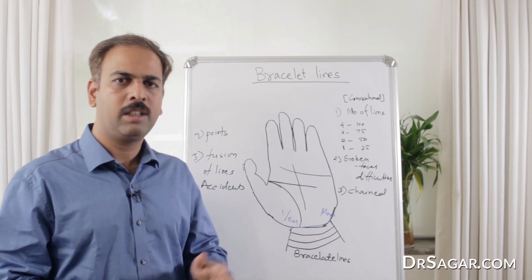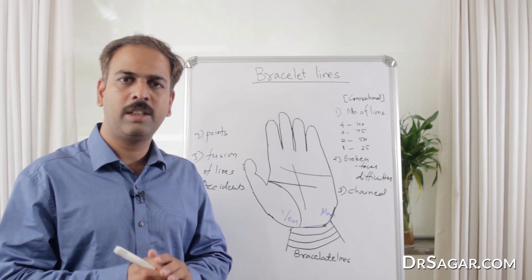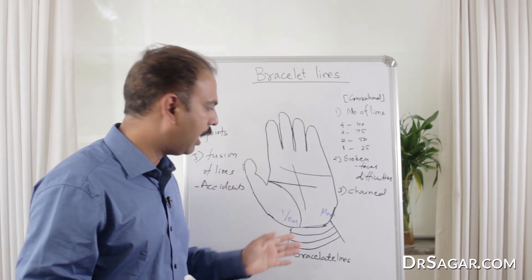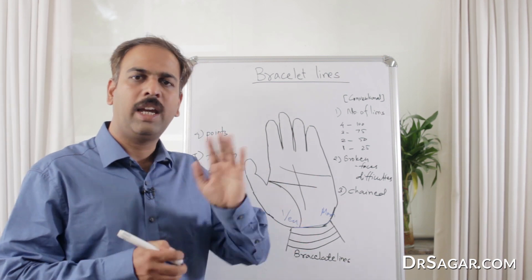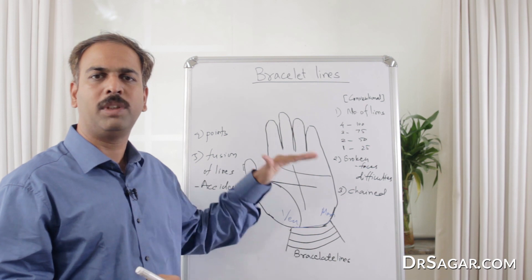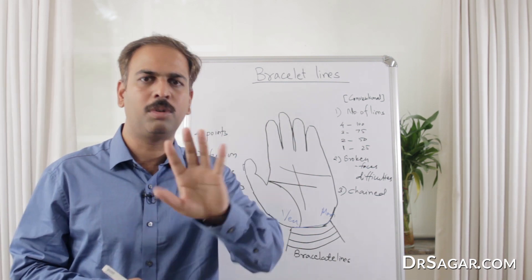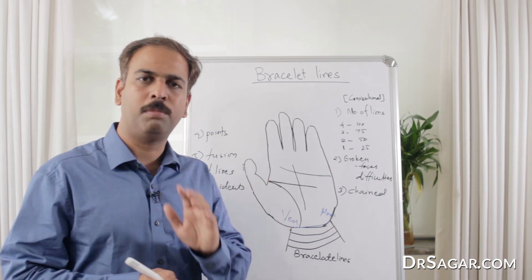But obviously, as I said, these years should be studied in the context of life line, fate line, headline, all the lines and signs. And then you can compare the bracelet lines with these signs and then you only interpret. Otherwise, it makes a lot of misunderstandings.